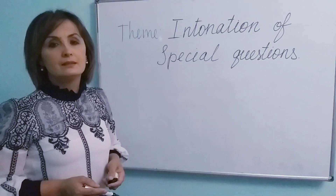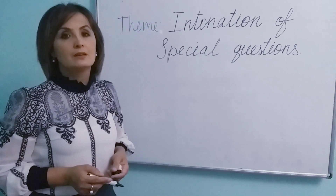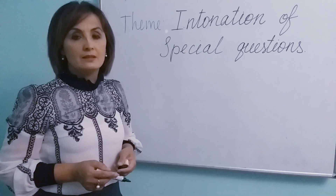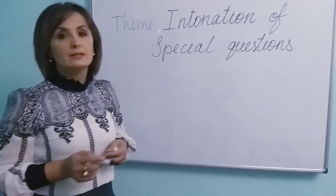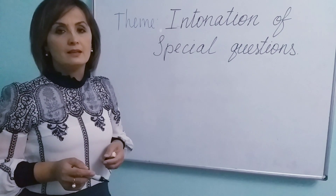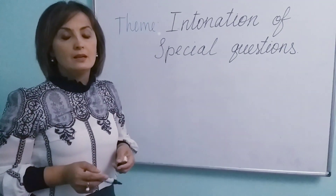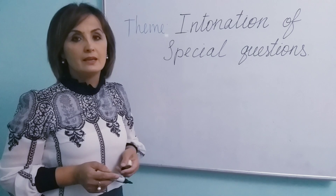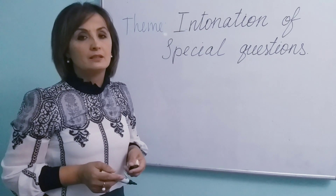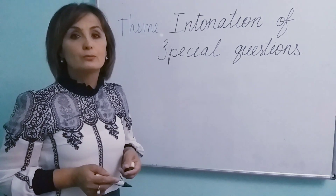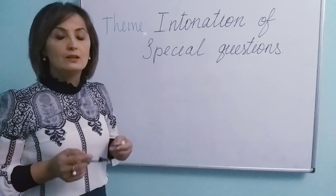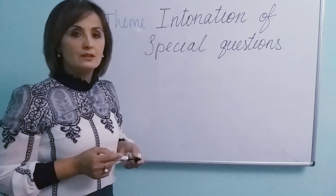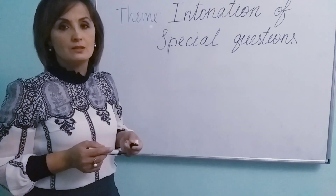At that time we told you that it is distinguished two main types of intonation: falling intonation and rising intonation, and each one of them are divided into some subgroups. For example, we take falling intonation — it is distinguished three types: low falling intonation, high falling intonation, and rise-falling intonation.